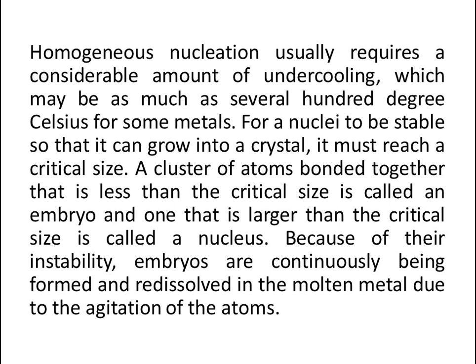Homogeneous nucleation usually requires a considerable amount of undercooling, which may be as much as several hundred degrees Celsius for some metals. For a nuclei to be stable so that it can grow into a crystal, it must reach a critical size. A cluster of atoms bonded together that is less than the critical size is called an embryo, and one that is larger than the critical size is called a nucleus. Because of their instability, embryos are continuously being formed and re-dissolved in the molten metal due to the agitation of the atoms.